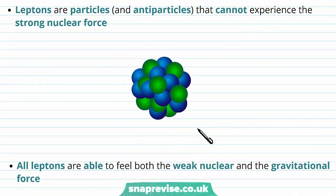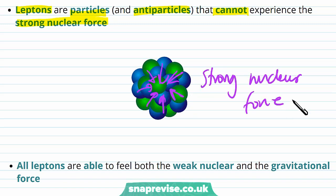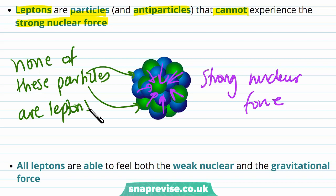Leptons are particles and antiparticles that cannot experience the strong nuclear force. If we consider protons and neutrons, they make up the nucleus and therefore experience the strong nuclear force — this tells us that protons and neutrons can't be leptons. Leptons, however, are particles that can't feel the strong nuclear force.